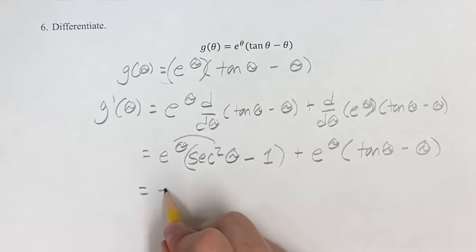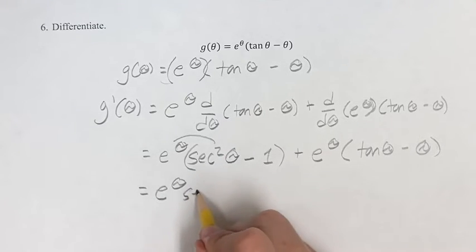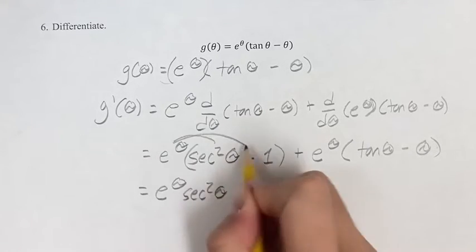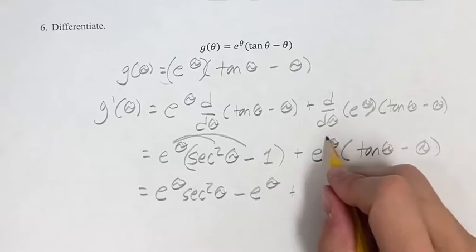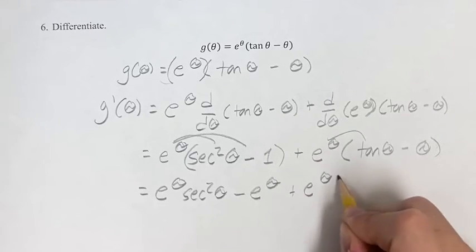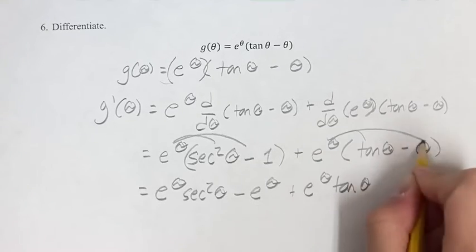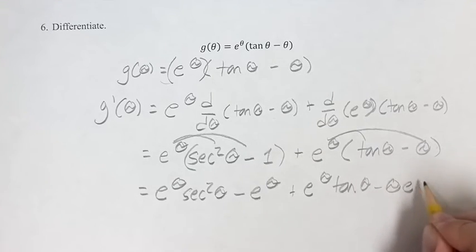This is equal to just distributing out e to the theta secant squared theta minus e to the theta plus e to the theta tangent theta minus theta e to the theta.